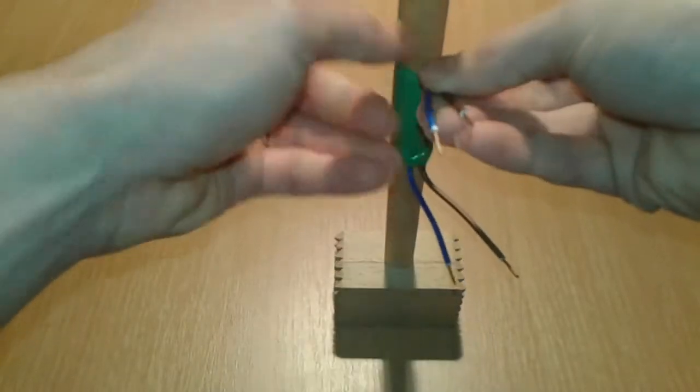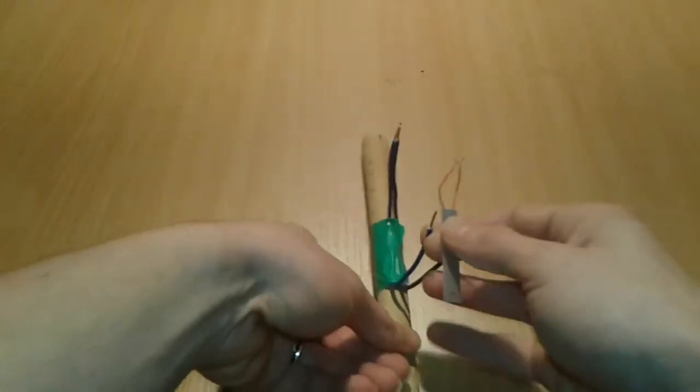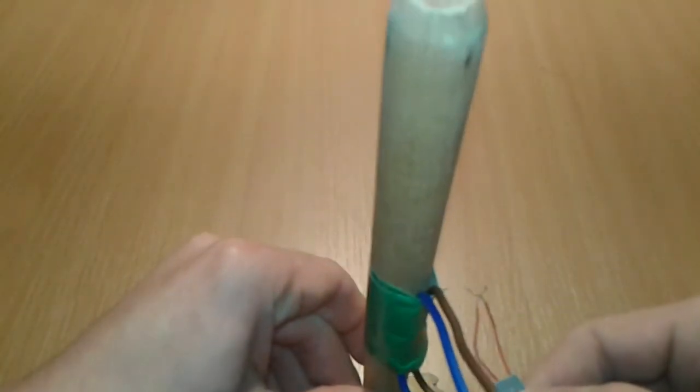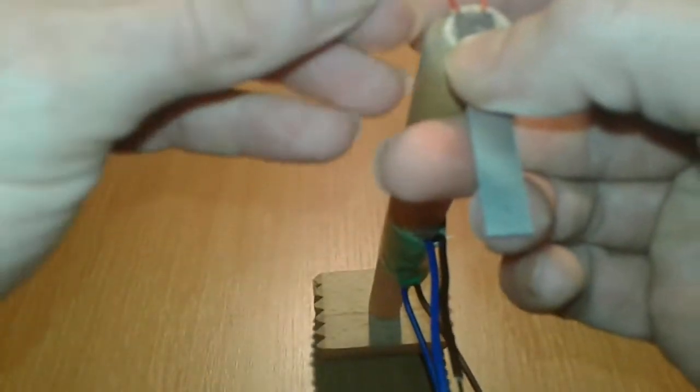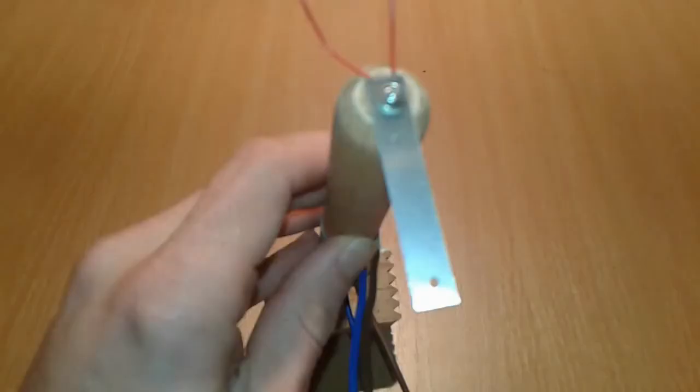Now we're going to start by mounting this LED on top of the hammer just like so and we're going to put a screw in place. All right, now we have the LED mounted on top of the hammer.